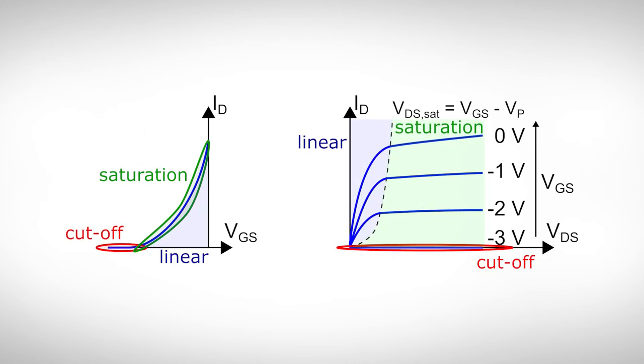Just like the bipolar transistor, the characteristic field of the JFET can be divided into different regions of operation in which the transistor has different properties. They are the cutoff region, the linear region, and the saturation region. Also for the JFET should be noted that the input and output designations are only conventions to describe the behavior and are totally unrelated to any circuit's input and output.